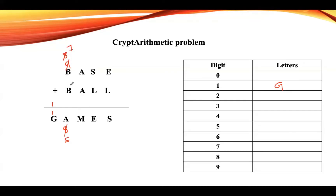Try 7: 7 plus 7 gives 14. If you take value of A as 4: 4 plus 4 gives 8, so no carry. Let us take value of M as 8 without carry. If you take with carry you will get 9. We'll first try to perform this addition without carry, and if there is any problem we can come back and take it with carry.